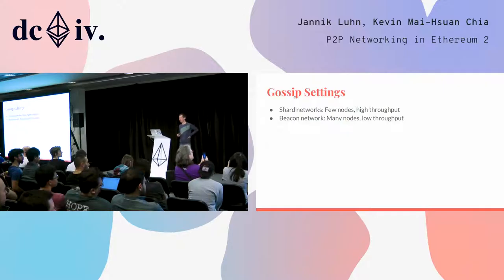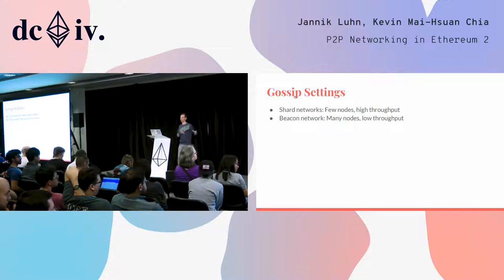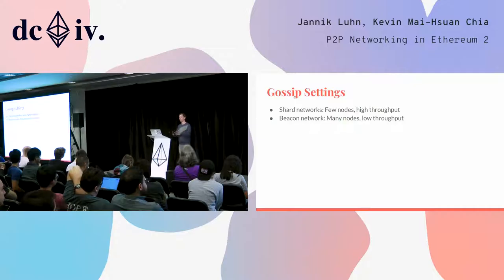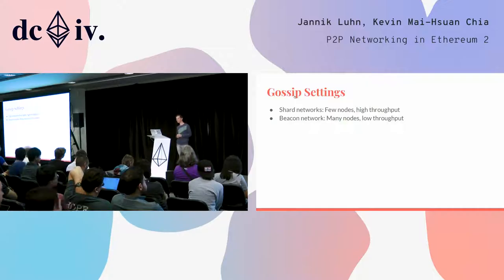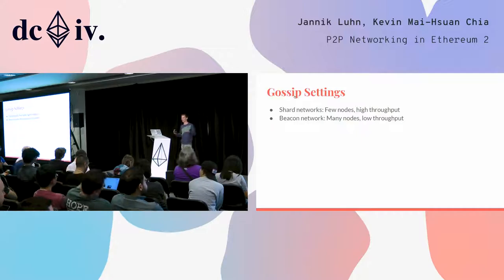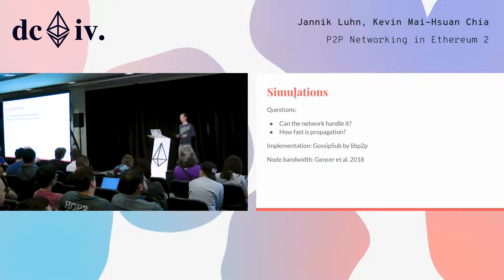We want to apply gossiping in two different settings: once in the shard networks and once in the beacon network. The difference is that in shard networks we only have a few nodes because they distribute themselves over different shards, but we have comparatively high throughput so a lot of data is transmitted. In the beacon network we have a lot of nodes because all nodes in the network participate, but it's much less data.